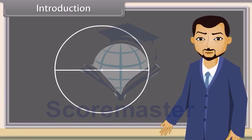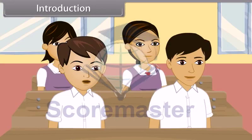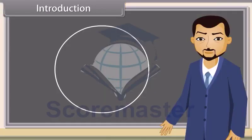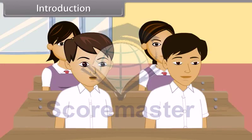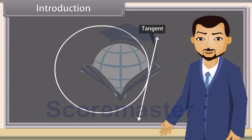Yes, you are right. And what if I mark a line segment here? What is this now? It's a chord. Correct. And what do we call this line? Tangent. Yes, this is a tangent of the circle. Today we will study about circles and tangents.